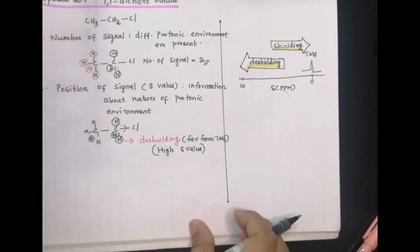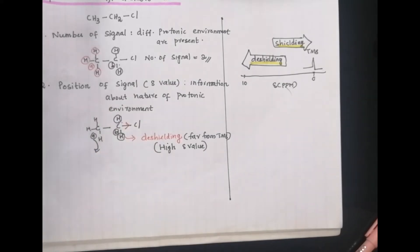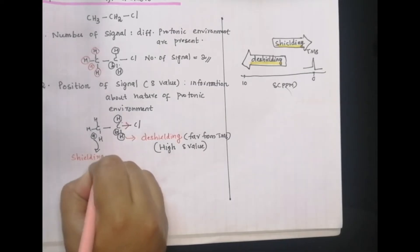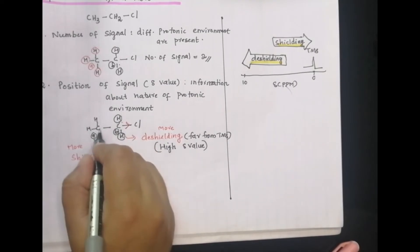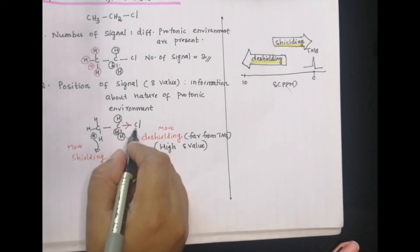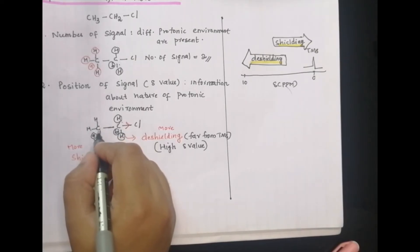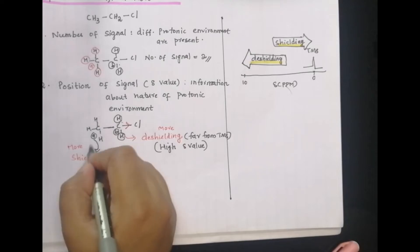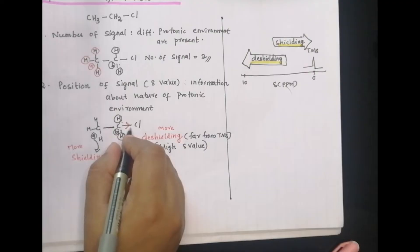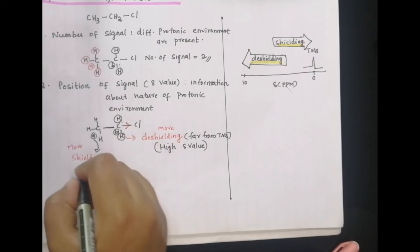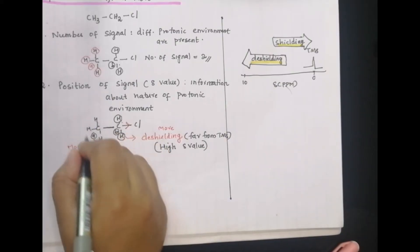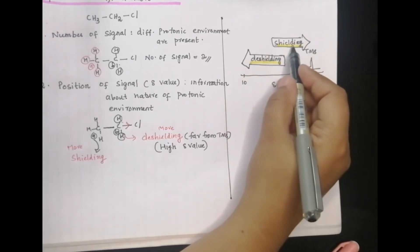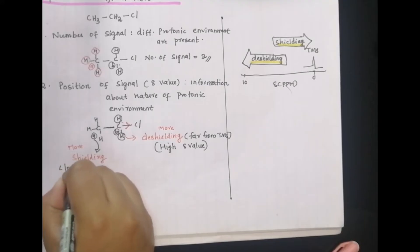The A-type protons — the CH3 group — feel more shielding effect, because they are far from the electronegative element chlorine. There is no withdrawal of electron density, so electron density remains high around those protons. More shielding means a lower delta value and a position closer to TMS on the chemical shift scale.